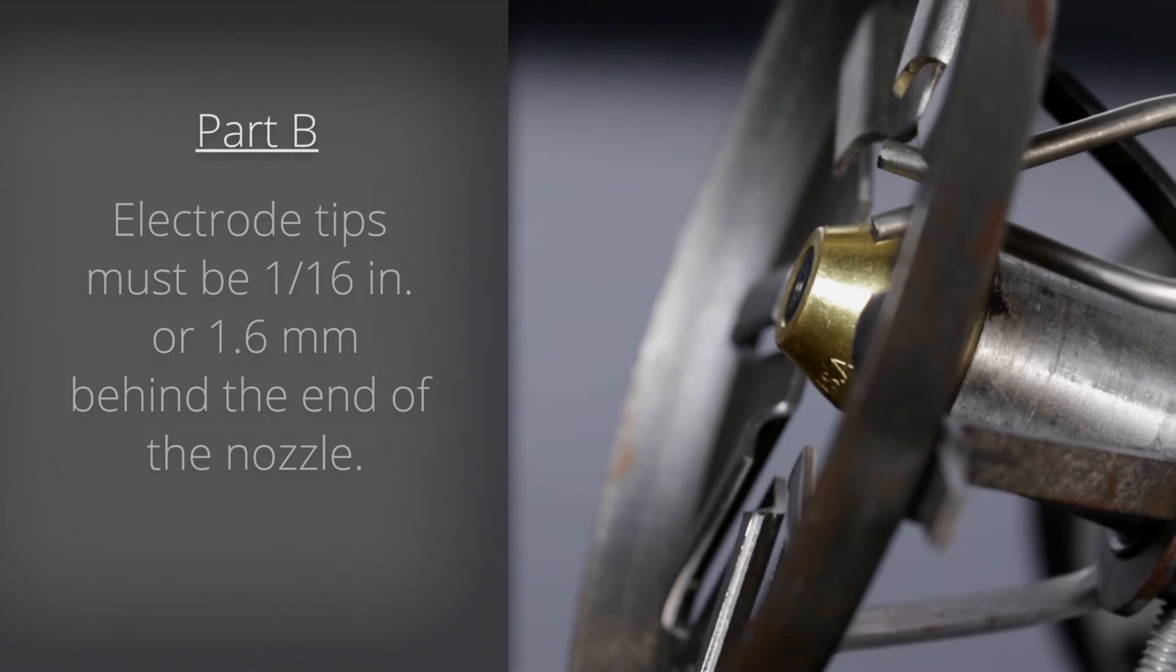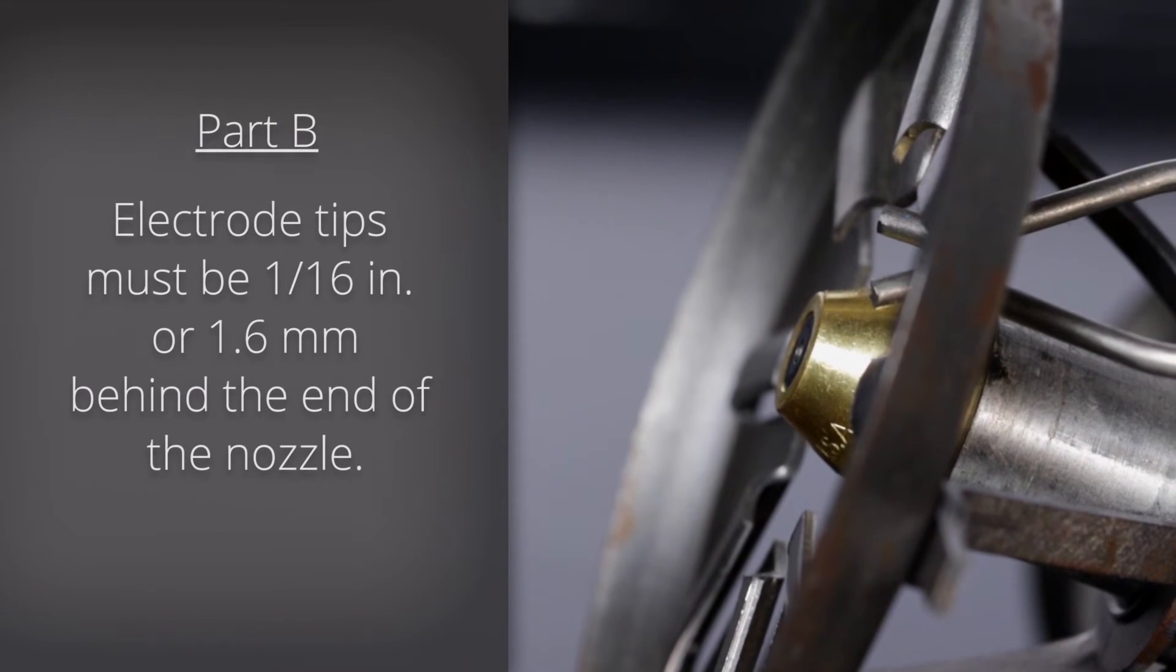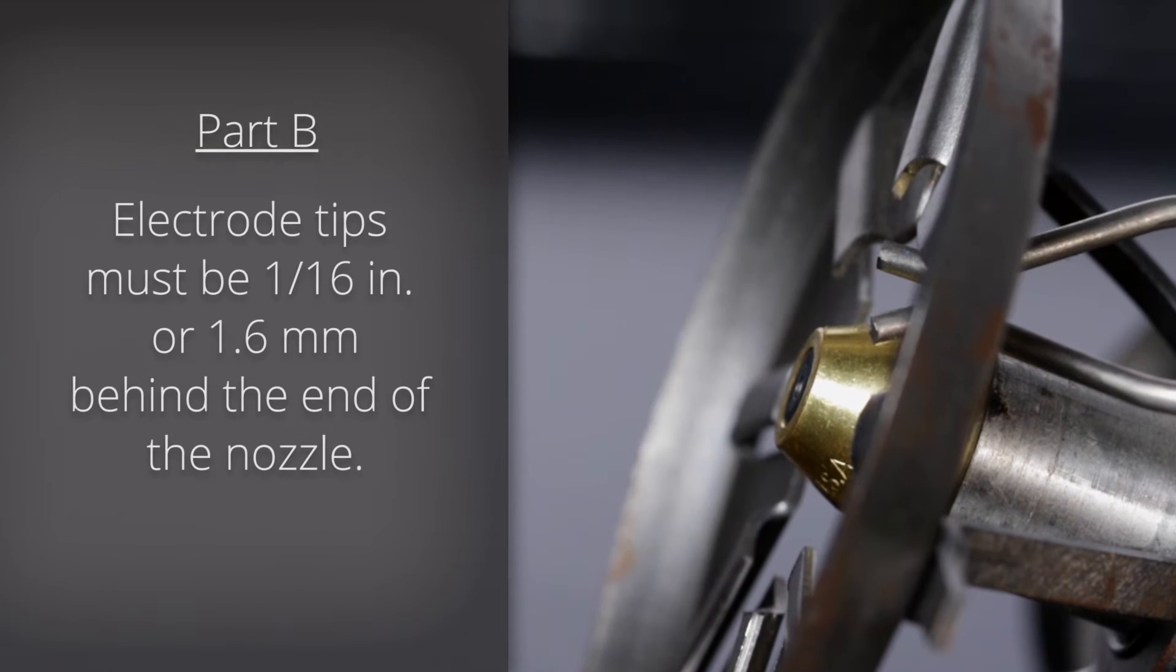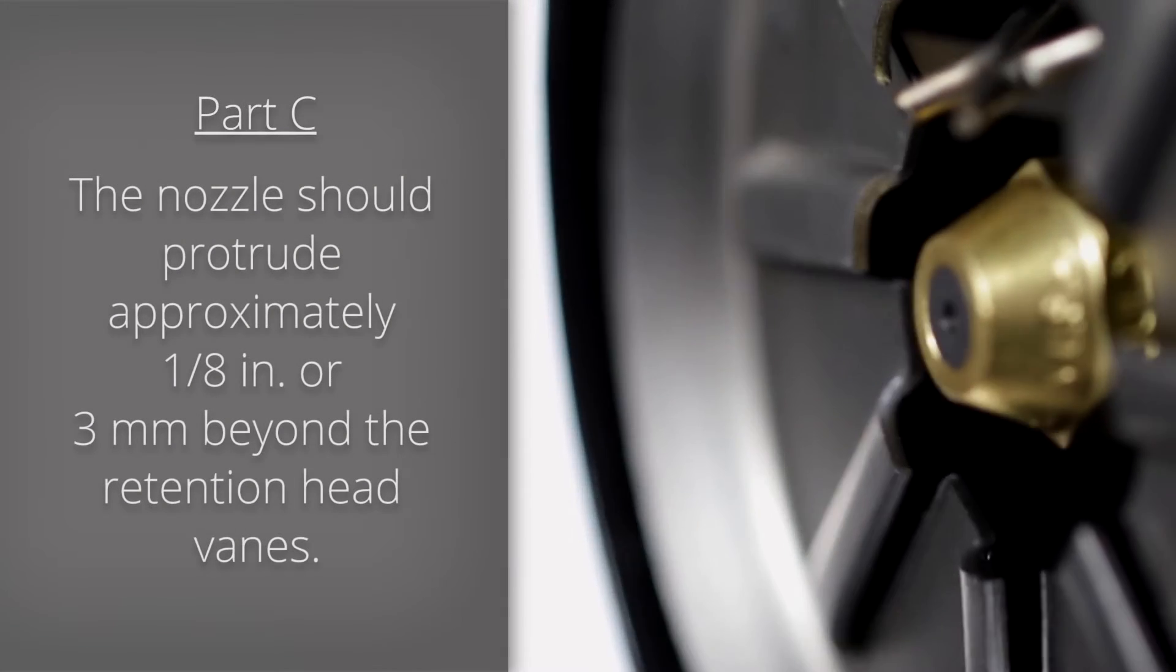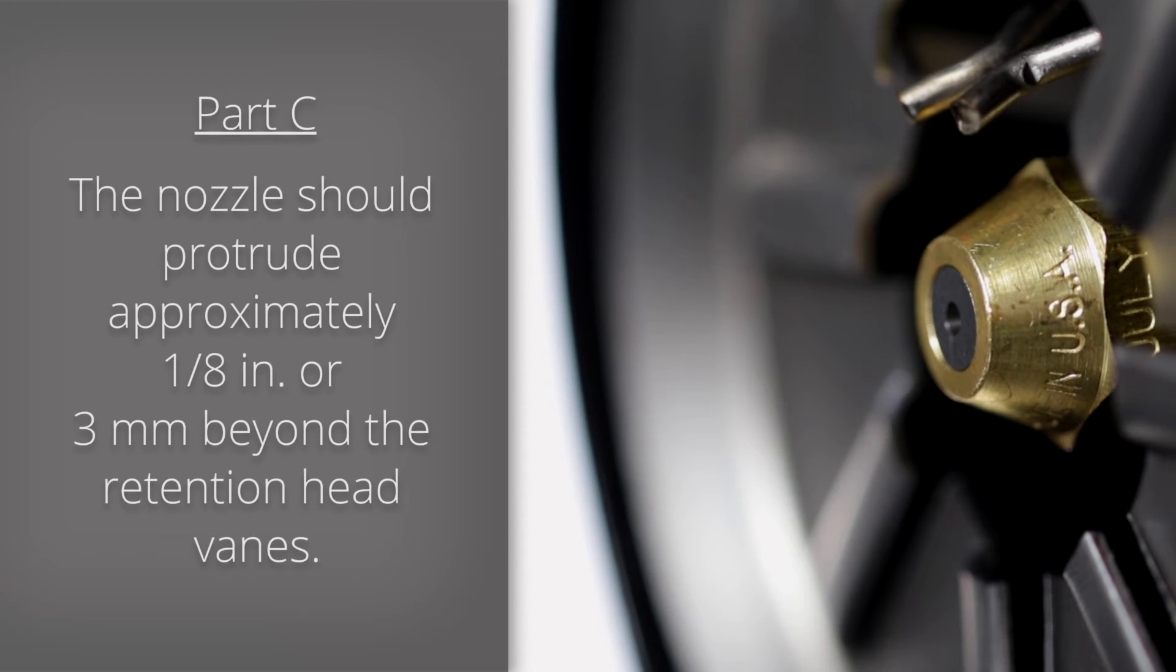Part B: Electrode tips must be 1/16th of an inch or 1.6 mm behind the end of the nozzle. Part C: The nozzle should protrude approximately 1/8th of an inch or 3 mm beyond the retention head vanes.